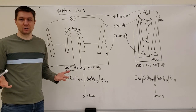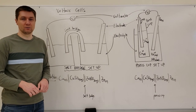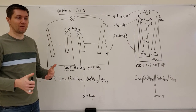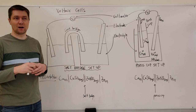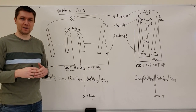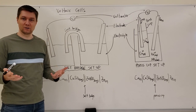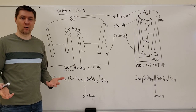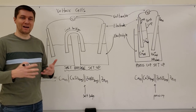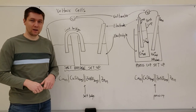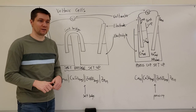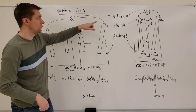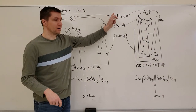There are a few terms you need to know related to voltaic cells and how they're set up. The first thing I like to do to identify a voltaic cell is check whether it has a voltmeter. If it has a voltmeter, that's a voltaic cell. You can see both diagrams here have a voltmeter hooked up to them.